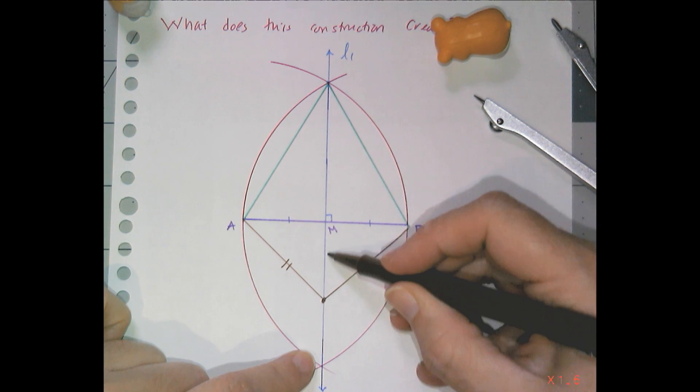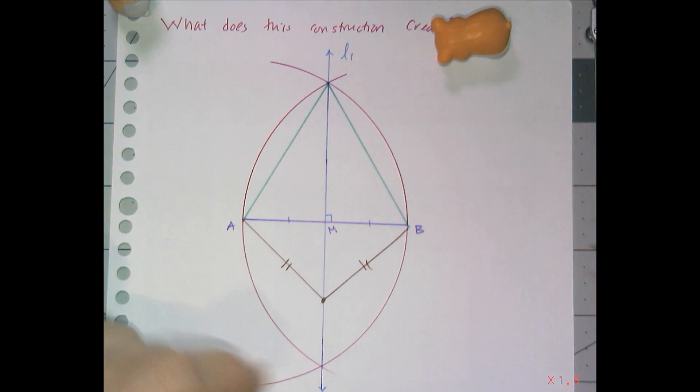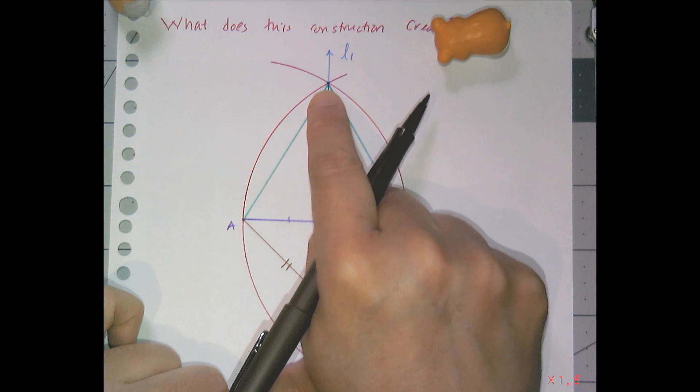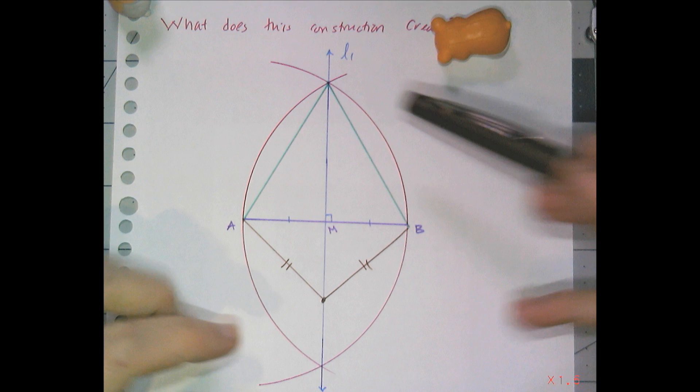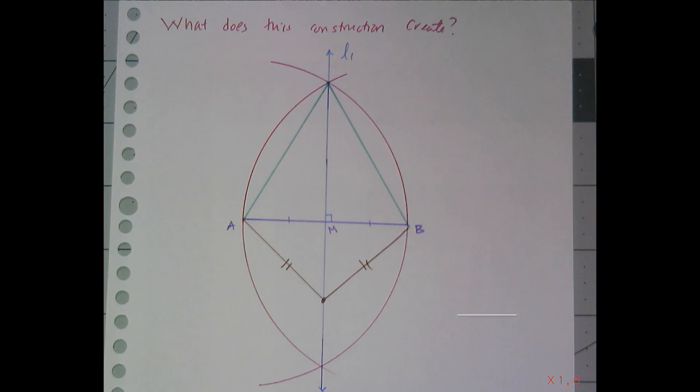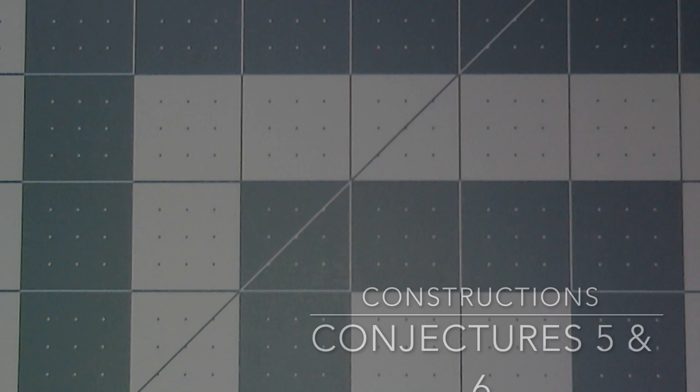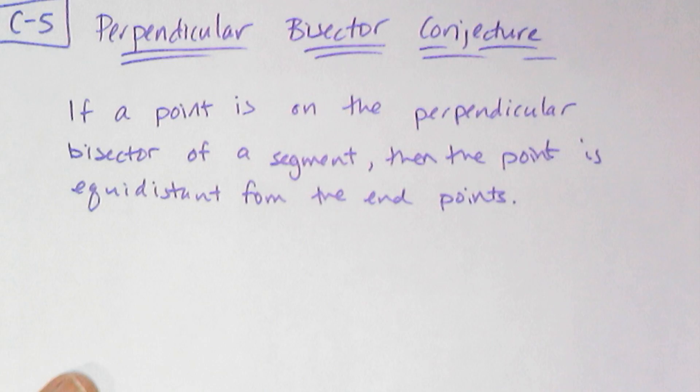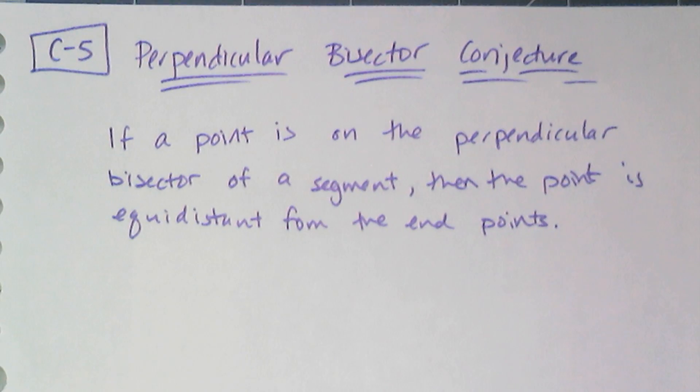And so any point on here, until I get to the points where the constructed circles intersect, I get an equilateral triangle and the rest are isosceles. Which actually takes us to a conjecture, a very important conjecture.